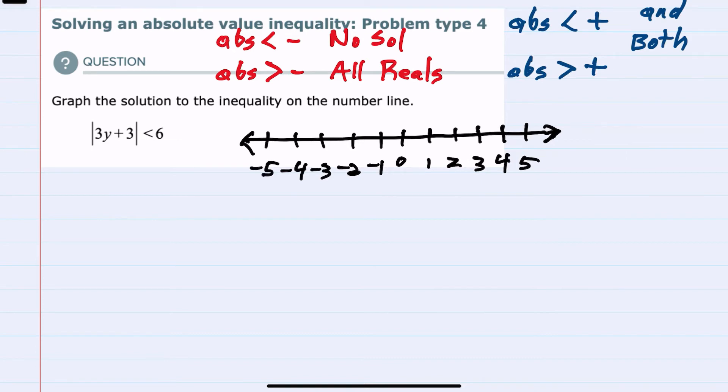The other possibility could be that an absolute value is greater than a positive. This would be an or situation, meaning we could have either of the two solutions that would work.